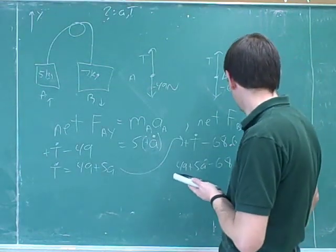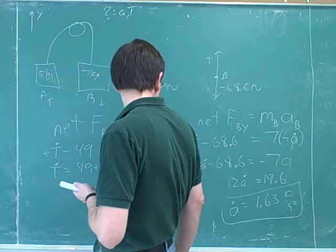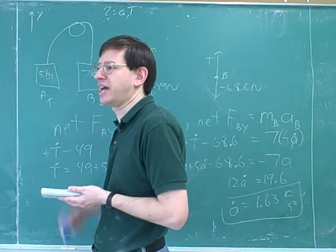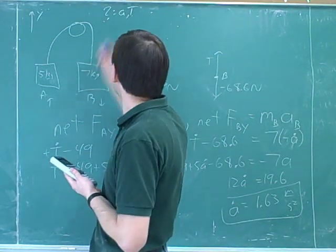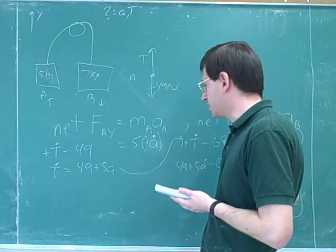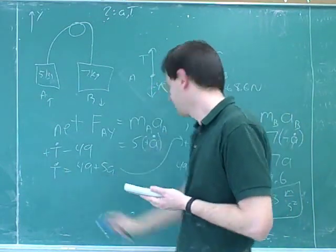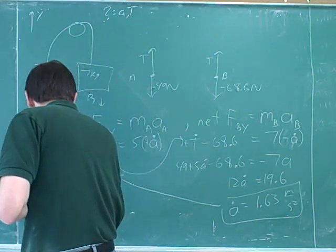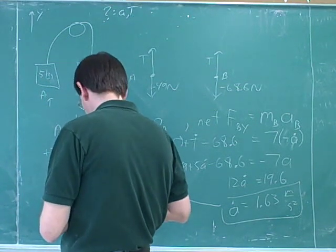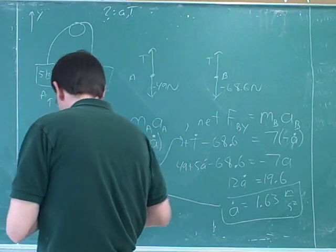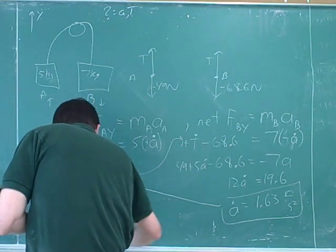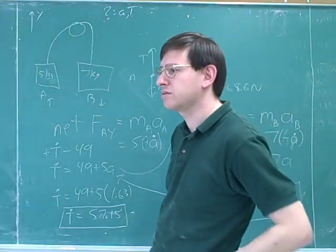So what's the answer to the question? A full answer would be to say that object A is accelerating at 1.63 meters per second squared up and object B is accelerating at 1.63 meters per second squared down. We want to give them magnitude and direction for each of those. To give a full answer we have to find the tension as well. But again that should be trivial. We just need to plug this into one of our equations. This is the simplest one because it's already solved for T. 57.15 newtons. It's good to always think about the units.